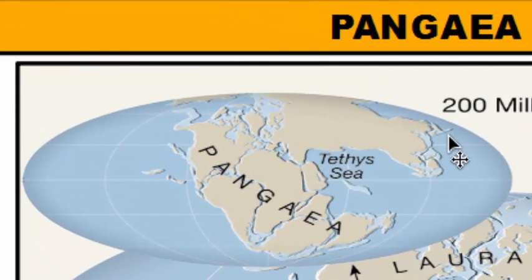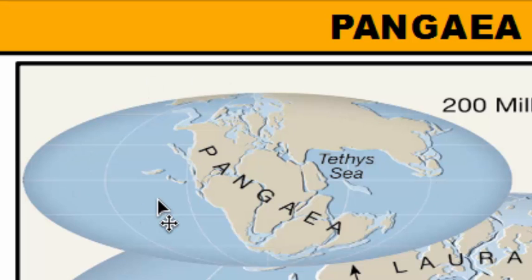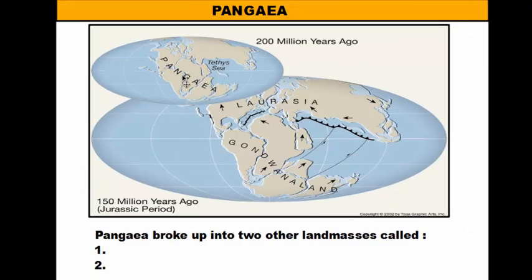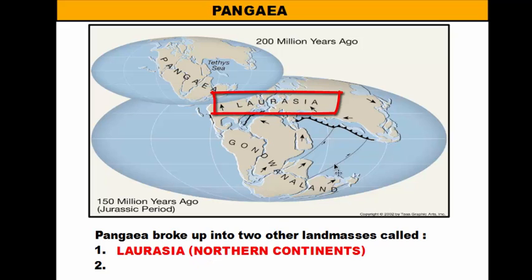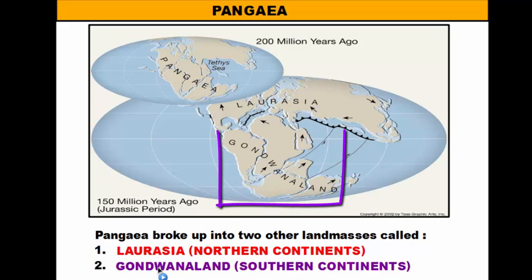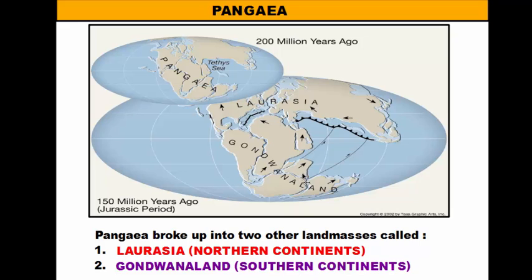Alfred Wegener stated that the supercontinent, which he coined or named Pangaea — meaning 'all Earth' — existed as one supercontinent surrounded by one ocean around the world. Eventually, Pangaea broke up into two superland masses: Laurasia in the north, composed of North America, Europe, and Asia; and Gondwanaland in the southern hemisphere, composed of South America, Africa, Antarctica, India, and Australia.